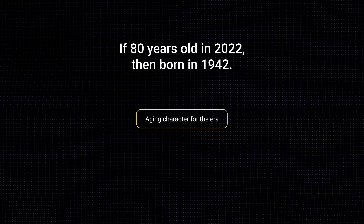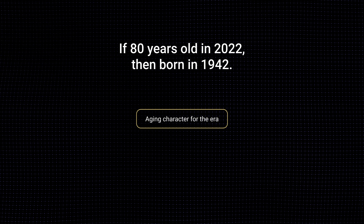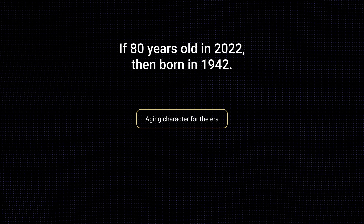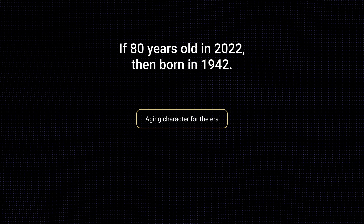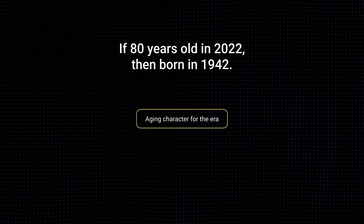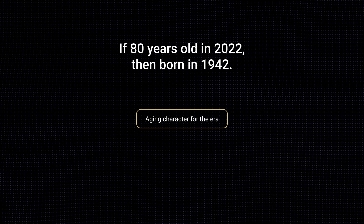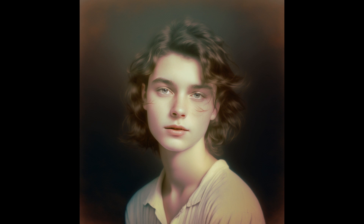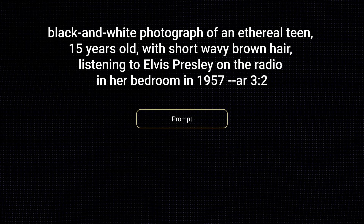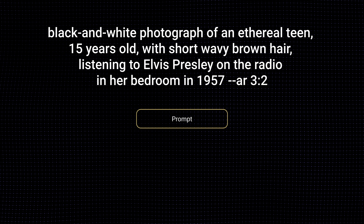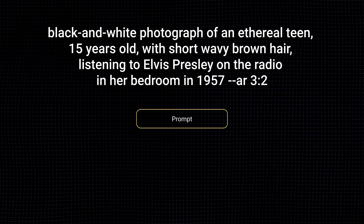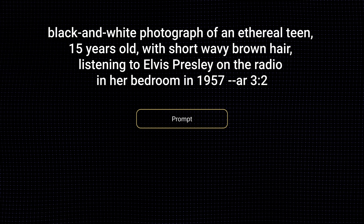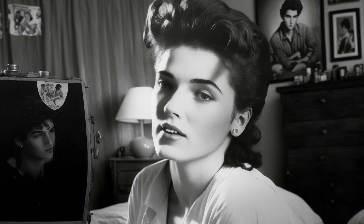At this point, I started to think about the character's age and what would have been the pivotal moments in her life as she grew older. That might be helpful in styling the background environment and even the appearance of your character based on hairstyles of the time. If our 80-year-old woman is photographed in 2022, that means she was born in 1942. I went back to the portrait of our 15-year-old girl — the year would have been 1957. A girl of that age would be listening to Elvis Presley. I remixed this photo: black and white photograph of an ethereal teen, 15 years old, with short, wavy brown hair, listening to Elvis Presley on the radio in her bedroom in 1957. Aspect ratio 3 to 2. The hairstyle is appropriate, and the bedroom background matches the era.